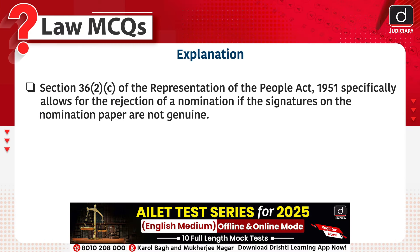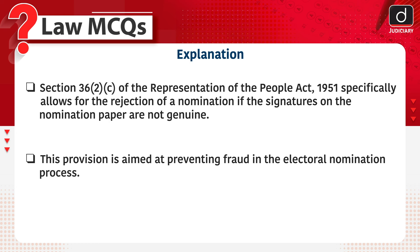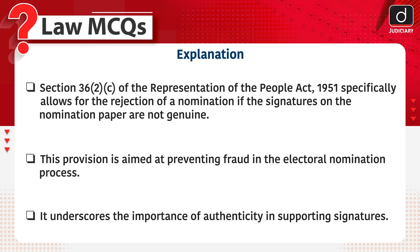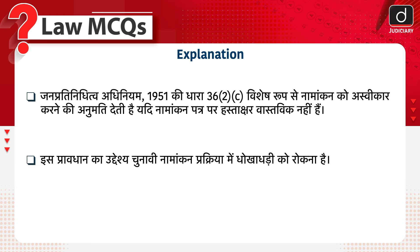Section 36(2)(c) of the Representation of the People Act, 1951 specifically allows for the rejection of a nomination if the signatures on the nomination paper are not genuine. This provision is aimed at preventing fraud in the electoral nomination process. It underscores the importance of authenticity in supporting signatures. Yadi namankhan patra par hastakshar vastavik nahi hain, to is pravdhan ka uddeshya chanaavi namankhan prakriya mein dhokhadhadi ko rokna hai.